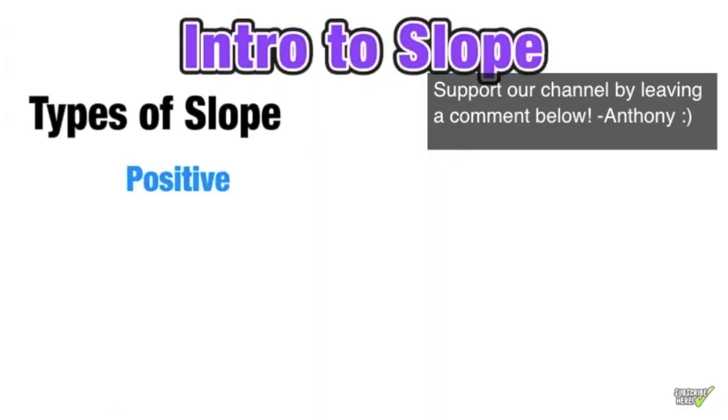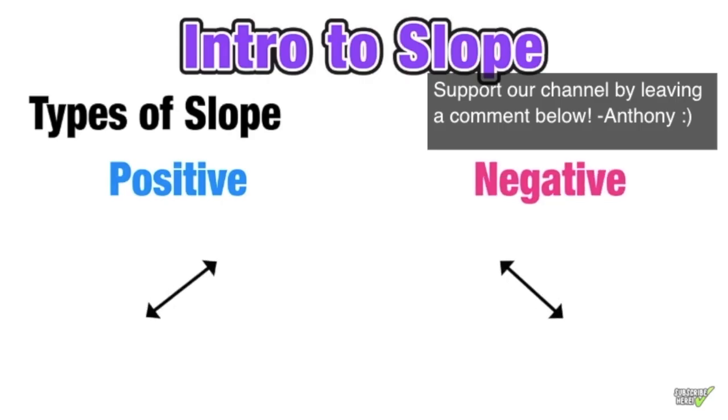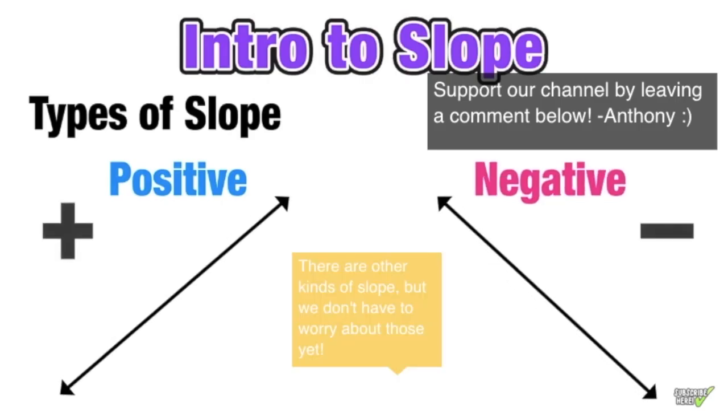In this lesson we're going to discuss two types of slope: positive and negative. Positive slopes increase from left to right, while negative slopes decrease from left to right.